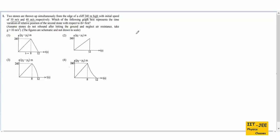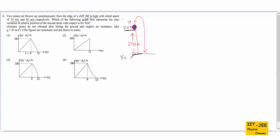Let's draw a diagram so you can visualize things easily. This is a cliff, and a ball is thrown up with velocity v; after some time it reaches the ground. The height of the cliff is 240 meters. We take the initial position at the top as y equals 0 to make calculations easier, so the ground below is at y equals minus 240.